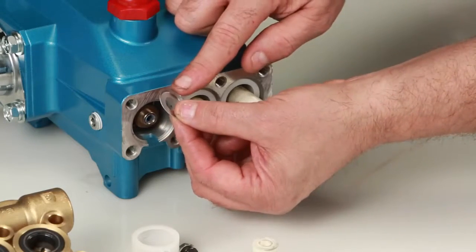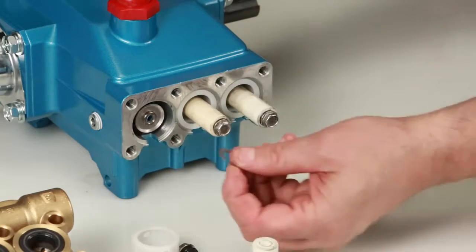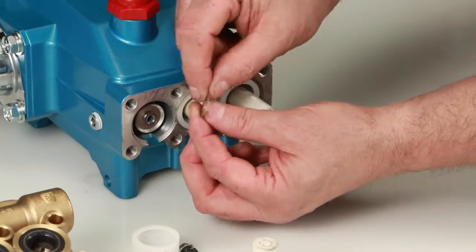Install the barrier slinger with the dish side facing away from the crankcase. Then install the keyhole washer. The slot can face in any direction.